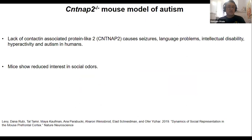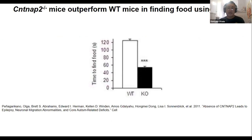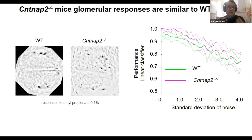We tested whether this computation is affected in the CNTNAP2 mouse model of autism, which produces seizures and autism-like behaviors in humans, and hyperactivity in mice. Importantly, these knockout mice are not anosmic — in fact, they are twice as fast as wild-type mice at finding food buried in bedding.